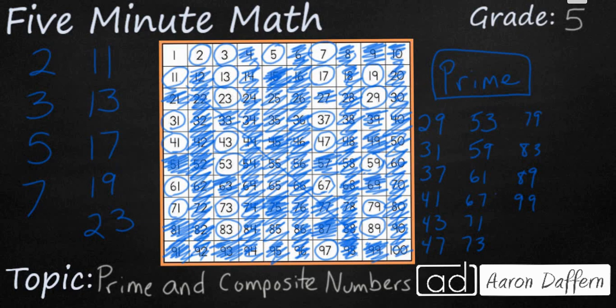Notice I haven't done anything with the number one. One is neither prime nor composite. Remember, prime numbers have exactly two factors. Composite numbers have three or more factors. The number one only has one factor, one. So it's a unique number. It's neither prime nor composite.